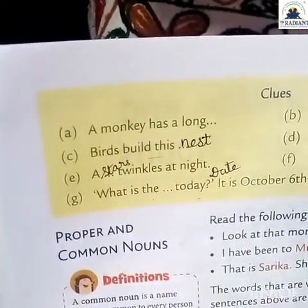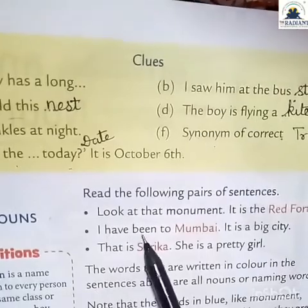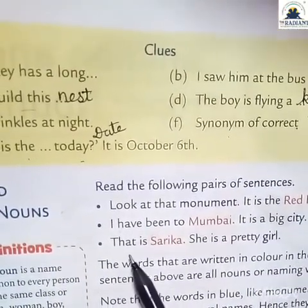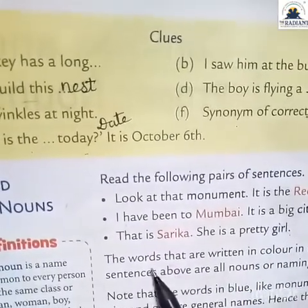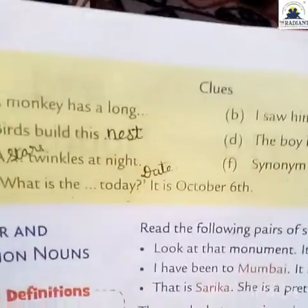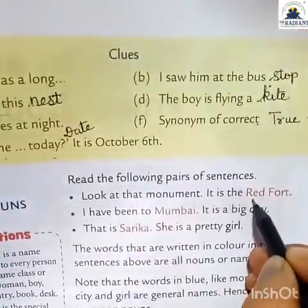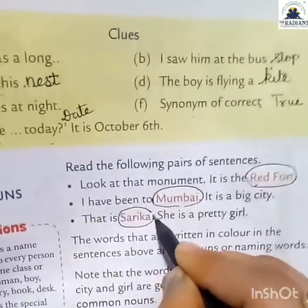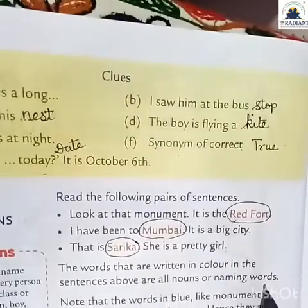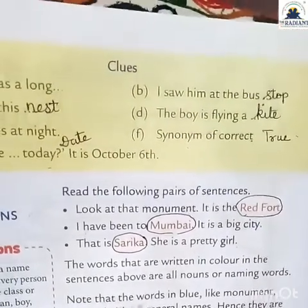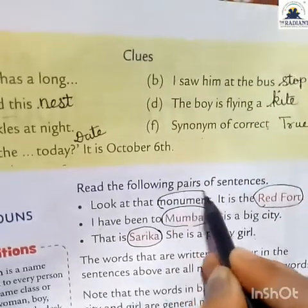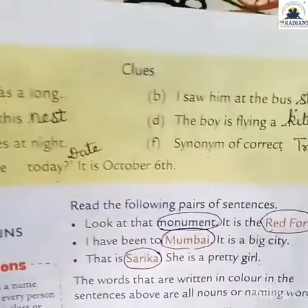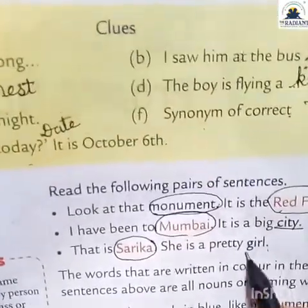Now read the following pairs of sentences: 'Look at the monument — it is the Red Fort.' 'I have been to Mumbai — it is a big city.' 'That is Sarika — she is a pretty girl.' The words written in color in these sentences are all nouns or naming words. Red Fort is a place, Mumbai is also a place, city is a name, and Sarika is a particular person's name. These are all naming words.